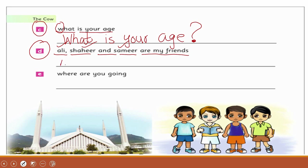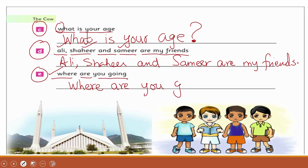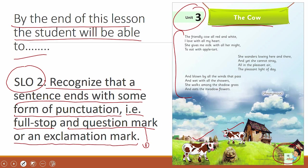'Ali, Shaheer and Samir are my friends' — full stop at the end. Part E: 'Where are you going?' — this is a question, so it starts with a capital letter and ends with a question mark at the end of every question. After the class task, you need to read this unit and circle all the full stops, question marks, or exclamation marks present in it.